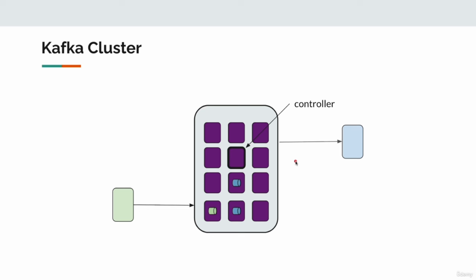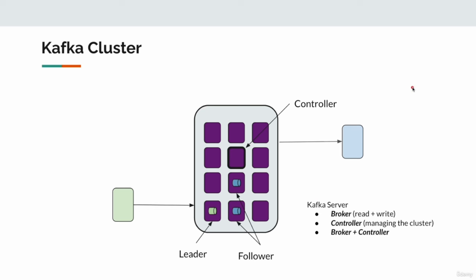So with that understanding, let me introduce a few Kafka terminologies. Each instance, we simply call Kafka servers. However, Kafka has specific terminologies: broker and controller. These are roles assigned to a server instance. A Kafka server can act as a broker, a controller, or both. The controller is the leader or manager responsible for managing the cluster, cluster metadata, and cluster health. The broker is responsible for managing topic data and interacting with clients.